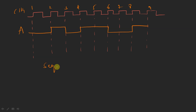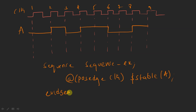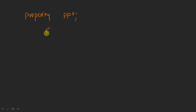Now let me write my sequence: 'sequence_example'. This sequence is evaluating at the posedge of clock, that is, dollar stable — we are using the function known as dollar stable of 'a' — and then end sequence. We are creating a property 'ppt' using sequence_example, and end property.